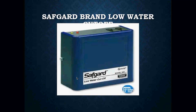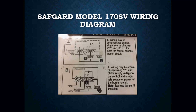This is a Safeguard brand low water cutoff — the model 170SV wiring diagram. There are two types of wiring: Wiring A may be accomplished using a single source of power — 120 volts — for both the control and your burner circuit. Your ground and 120-volt power source is wired into your H, then a little jumper between H and P1 sends that out to your controls. P1 and P2 will close to turn on your burner circuit, and the normally closed will open your alarm or feeder in the event of a low water situation.